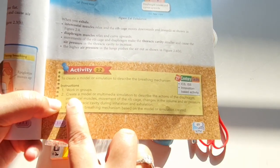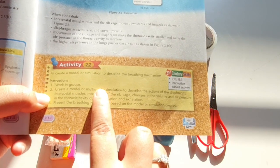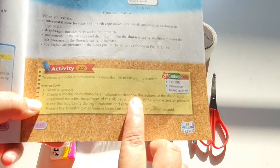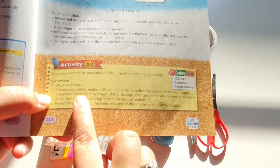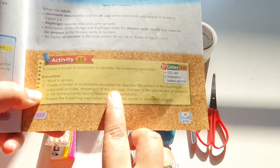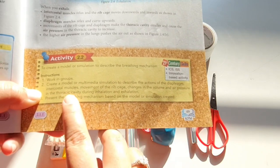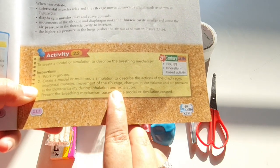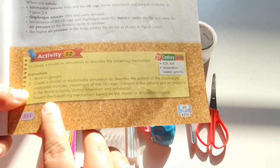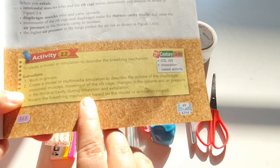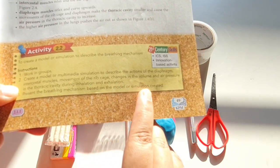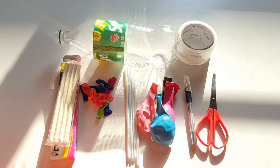What you need to do is to create a model or multimedia simulation to describe the actions of the diaphragm, intercostal muscle, movement of the ribcage, changes in the volume and air pressure in the thoracic cavity during inhalation and exhalation. And then you have to present the breathing mechanism based on the model or simulation created. And today I'm going to show you how to build a model to describe the breathing mechanisms.